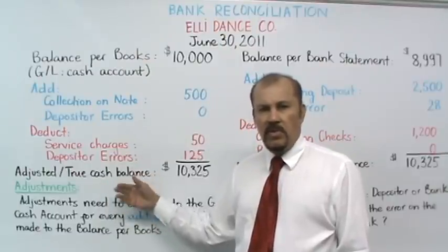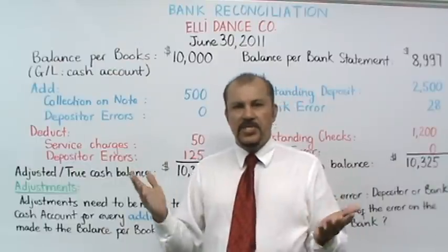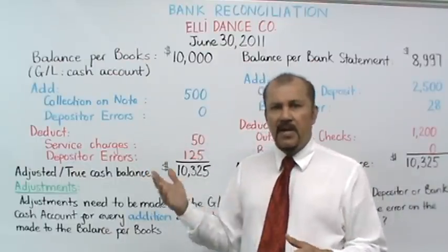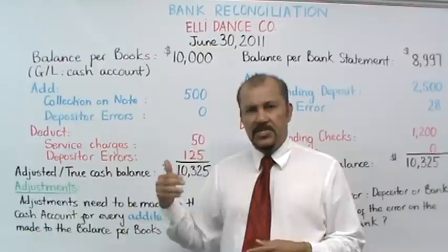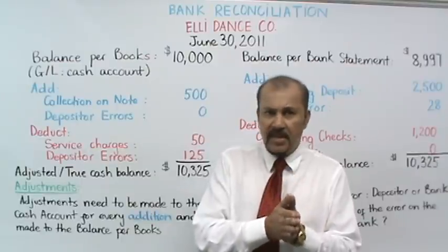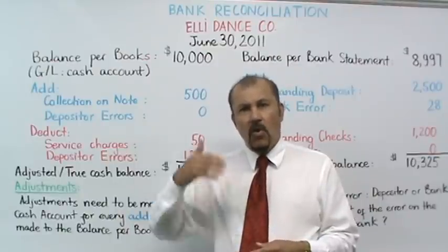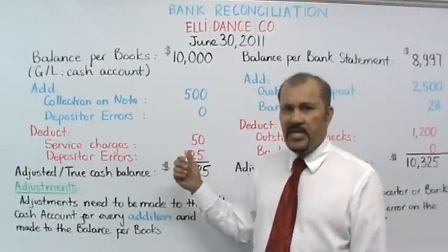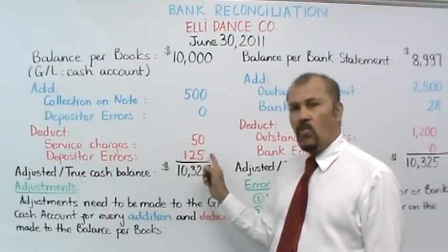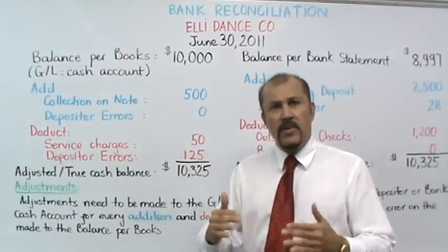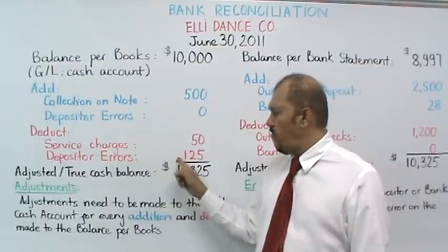Depositor error. When going through the records, we find that Ellie's bookkeeper made an error that affected her book balance. Let's say hypothetically that during the month, on a deposit that Ellie was making for $1,000, the bookkeeper put $1,125 as the number on Ellie's books. Even though the deposit was made for $1,000, Ellie's bookkeeper showed a deposit of $1,125 going in. That means the bookkeeper overstated the deposit by $125, which caused Ellie's book balance to be overstated by $125. So we need to subtract the $125 from Ellie's book balance to offset this error.